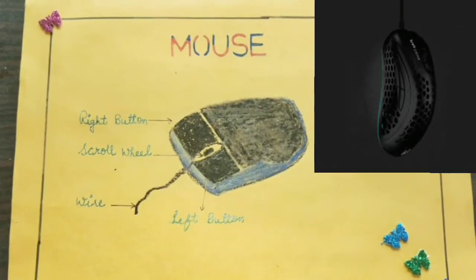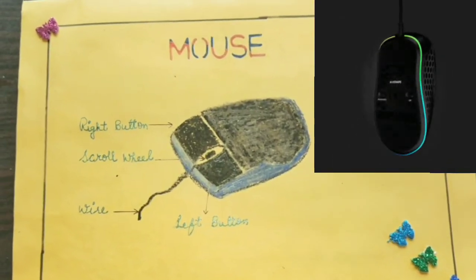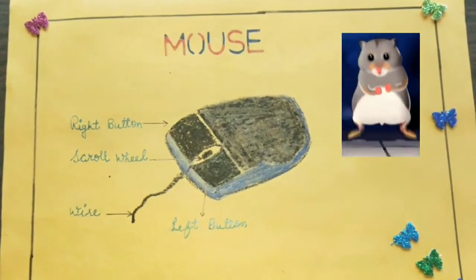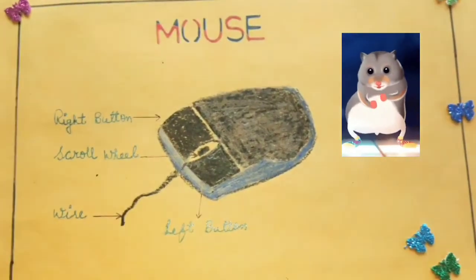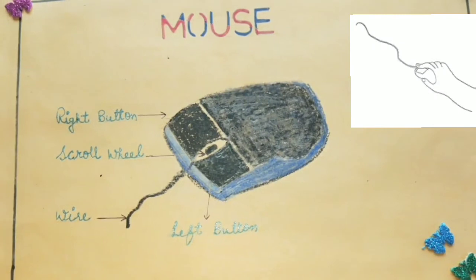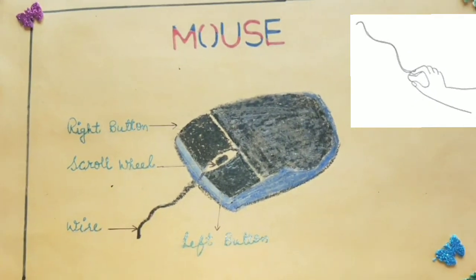A mouse is small in size. It looks like a real mouse. Its wire looks like a tail.